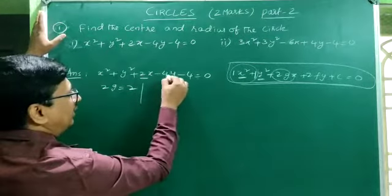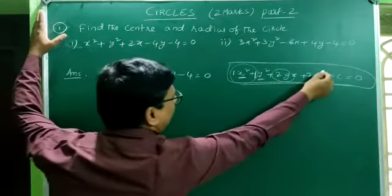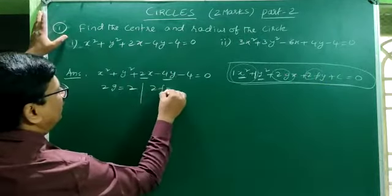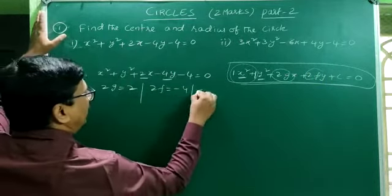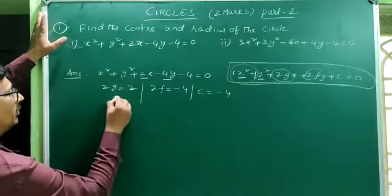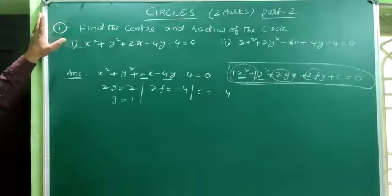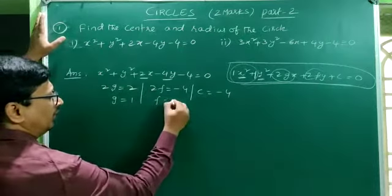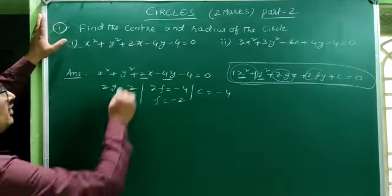In the same way, the y coefficient is −4, so 2f = −4. And c = −4. From 2g = 2, we get g = 1. From 2f = −4, we get f = −2.